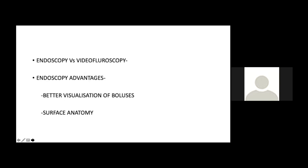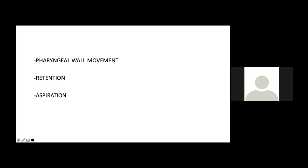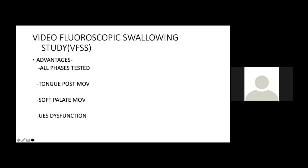FEES advantages include better visualization of boluses, surface anatomy of the pharynx and larynx, mucosal surfaces, velopharyngeal competence, laryngeal movements, pharyngeal movements, and sensory assessment by touching the aryepiglottic fold or arytenoid and observing laryngeal constriction. Aspiration and residue can be visualized directly. VFS tests all phases from oral cavity through pharynx to esophagus — including tongue posterior movement, soft palate movement, and upper esophageal sphincter function.